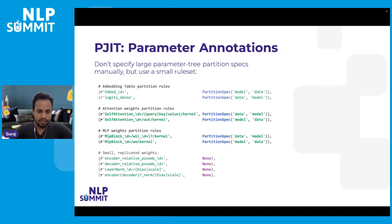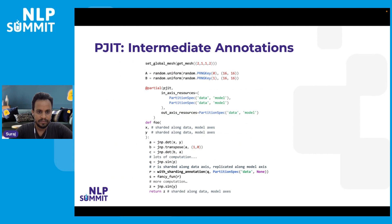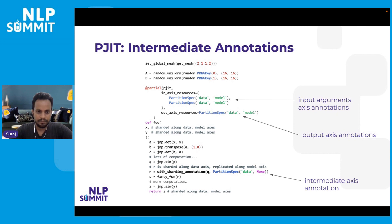To actually shard a model, we provide this partition spec for each parameter. For example, in a transformer model we typically have an embedding, a self-attention block, an MLP block, and position embeddings — and we provide a partition spec for each of those tensors specifying where to shard them. When predicting a function, we can also provide intermediate sharding annotations for activation sharding or gradient sharding. This is a simple function that takes in-axis and out-axis resources and also includes a with_sharding_constraint line, which shards the intermediate results according to a partition spec, allowing you to shard your intermediate activations.